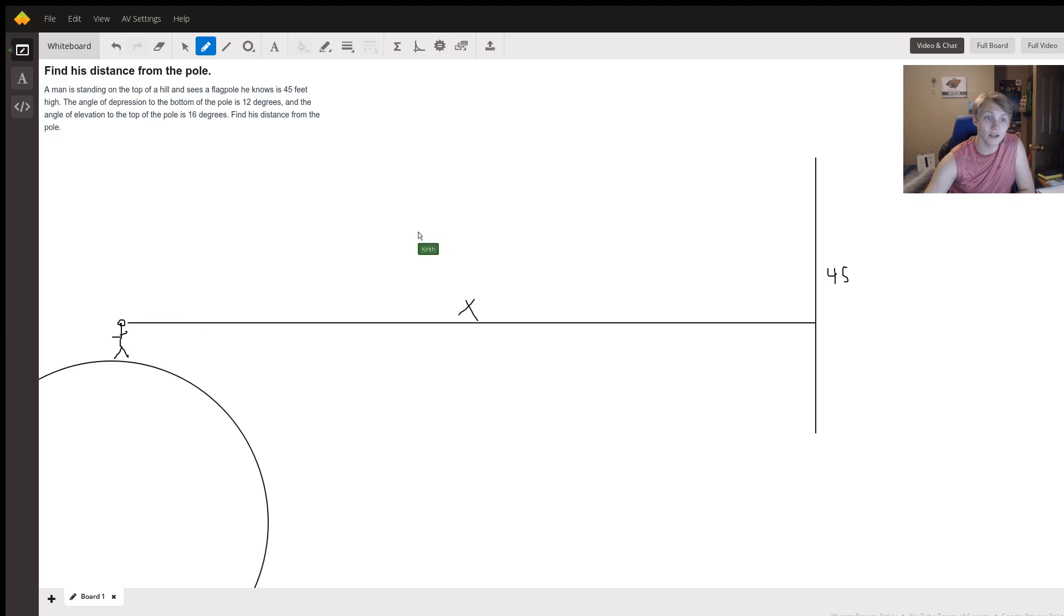We know that the angle of elevation to the top of the pole is 16 degrees, and the angle of depression, which is the angle at which your head will tilt down from horizontal, is equal to 12 degrees. So how are we going to solve this problem?